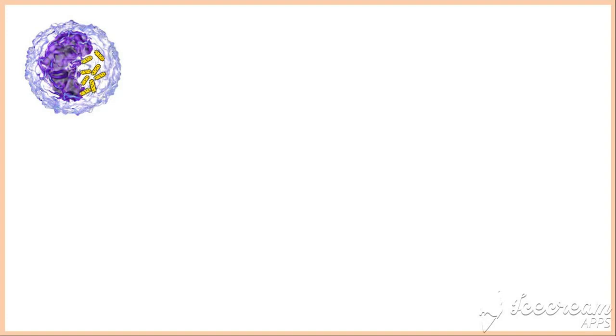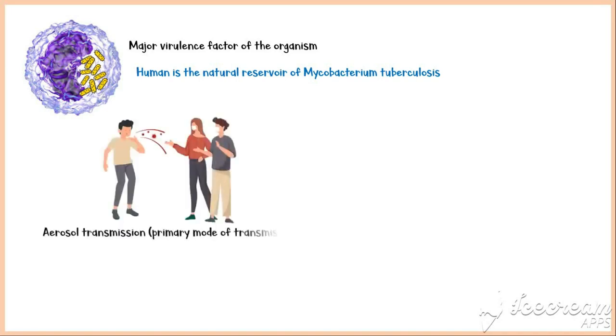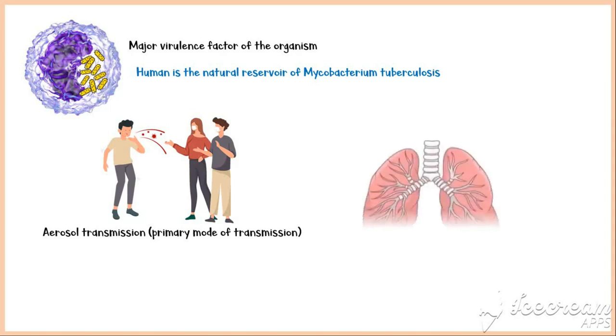Mycobacterium tuberculosis has the ability to survive and multiply inside the macrophages by avoiding lysosomal killing. This is the major virulence factor of the organism. Humans are the natural reservoir of Mycobacterium tuberculosis, and the infection is primarily transmitted via aerosol transmission. The organism primarily infects the lungs.